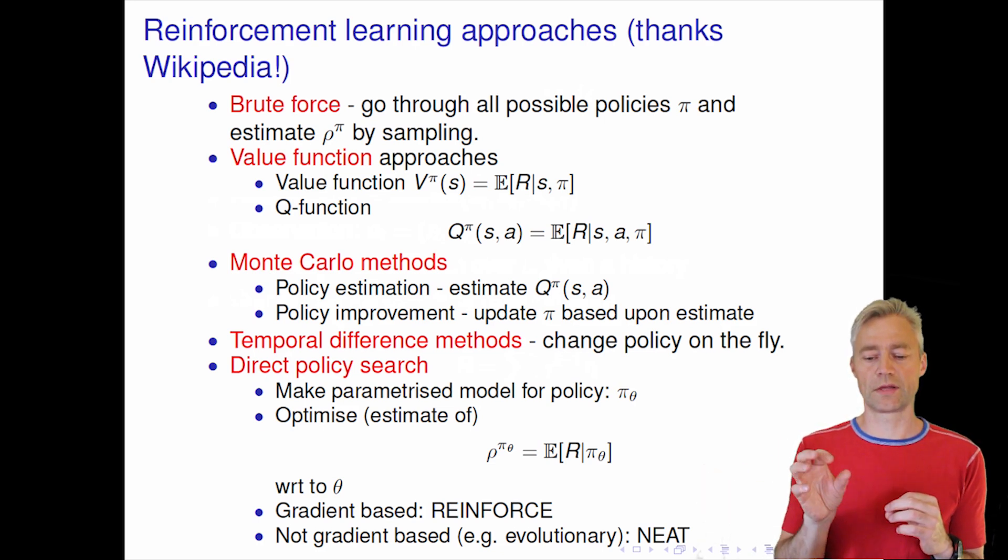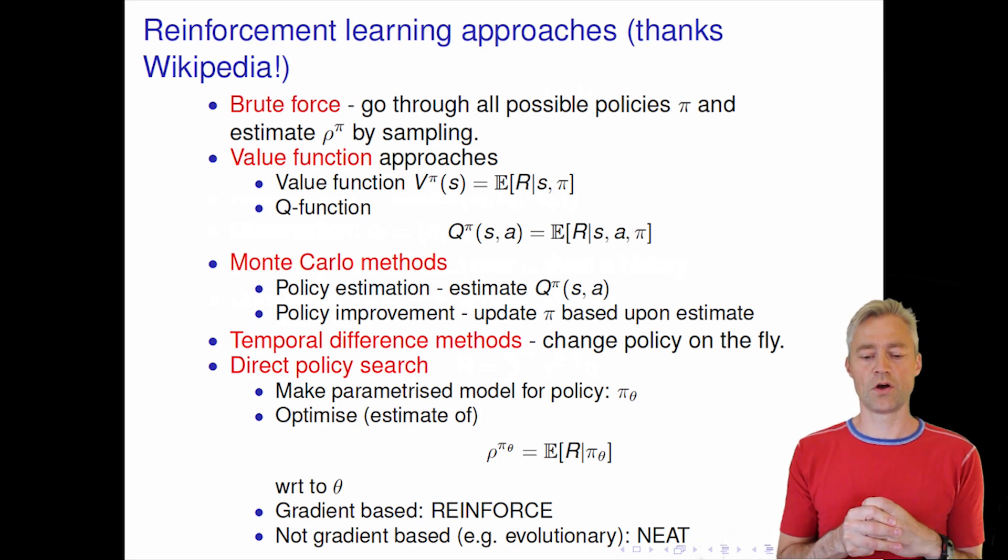And then there are some weights in this network and that's shorthand for this theta. And the idea now is that you can try to make an estimate of this expected cumulative reward. And then you can take the gradient of this function. And you can try to do a sampling-based estimation of this cumulative reward approximation.